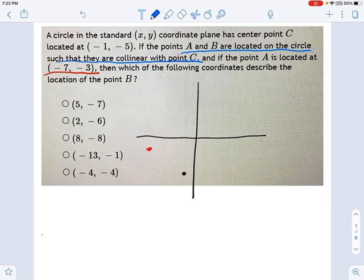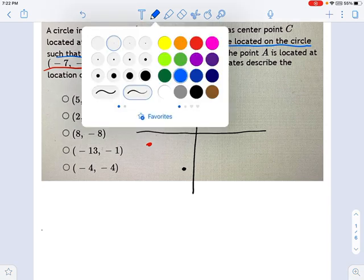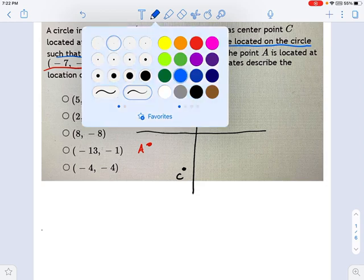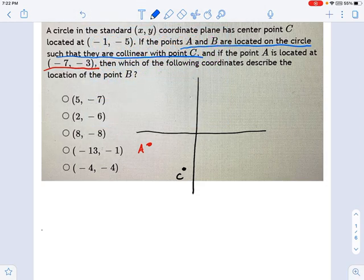Well, what does collinear mean? That means they're on a straight line. So if I draw a line between A and B, and let's get some labels on here actually, so I can stop messing this up. There's A, and there's C, and I know point B is on this line that's formed between the two of those.